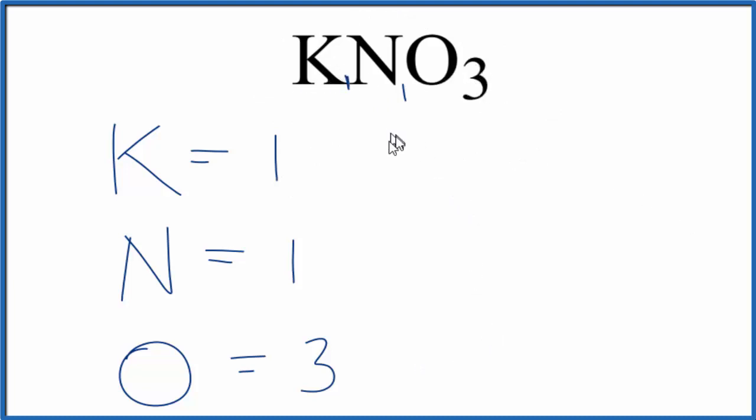Sometimes you're asked to figure out the number of oxygen atoms in one mole of potassium nitrate. In that case, you would take the number of oxygen atoms and multiply that by Avogadro's number. So three times Avogadro's number gives you the number of atoms of oxygen in one mole of KNO3.